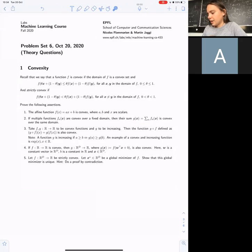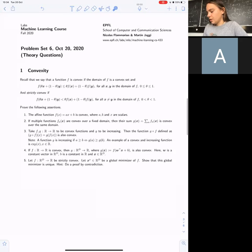Then that the composition of a convex and increasing function is convex, and then that the composition of a convex function and affine function is convex. The last question asks you to prove that for strictly convex functions you have only unique minima.